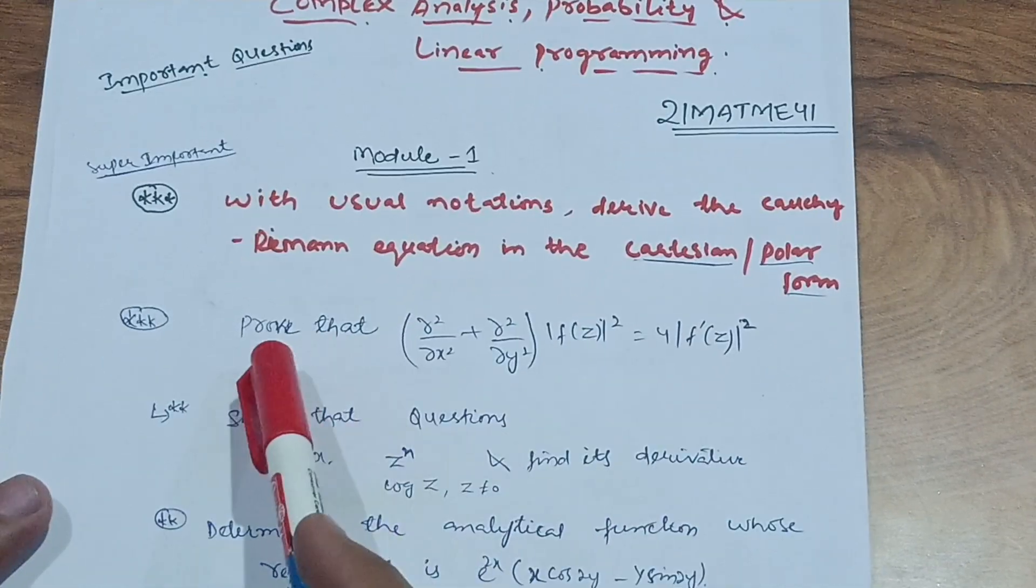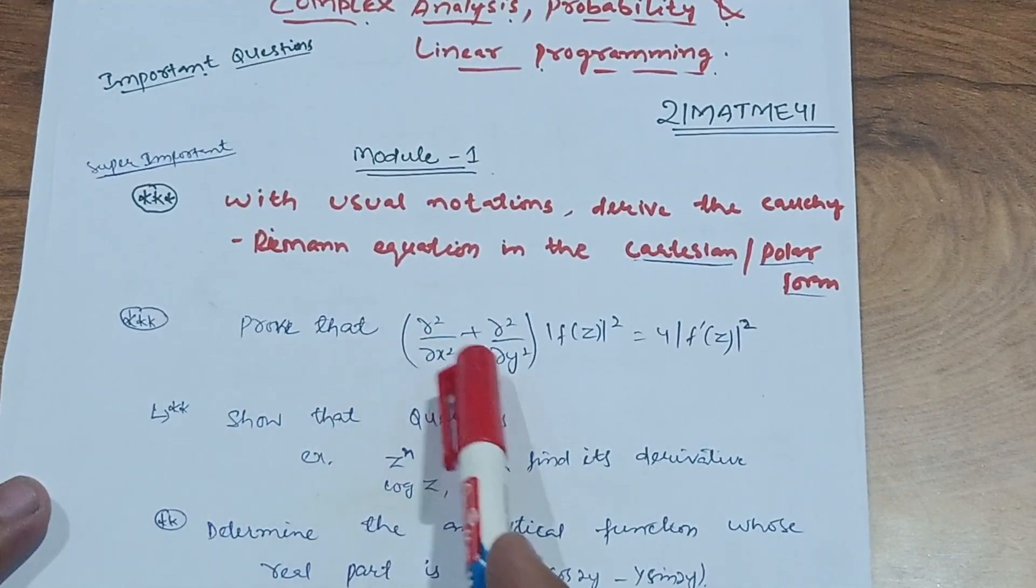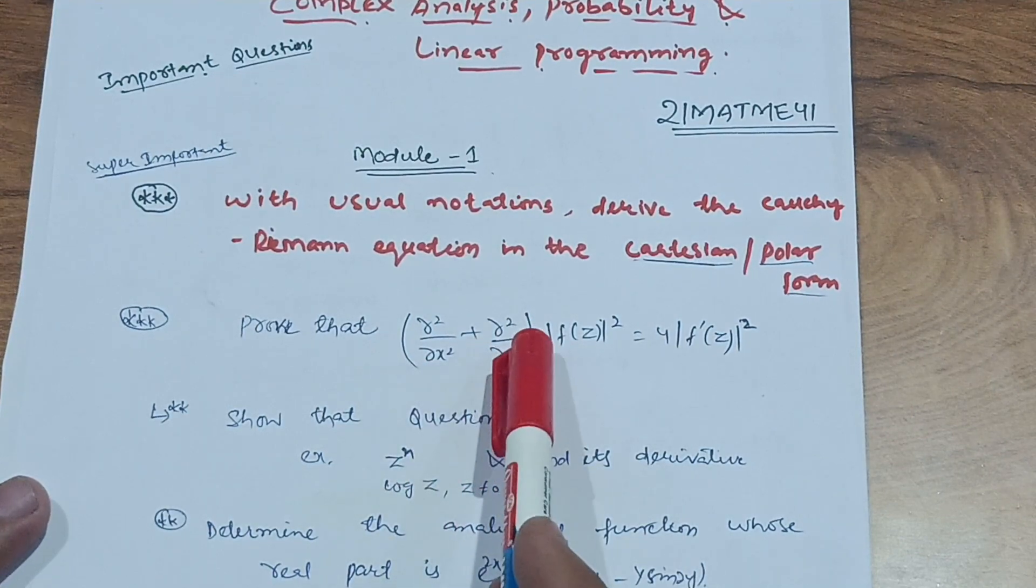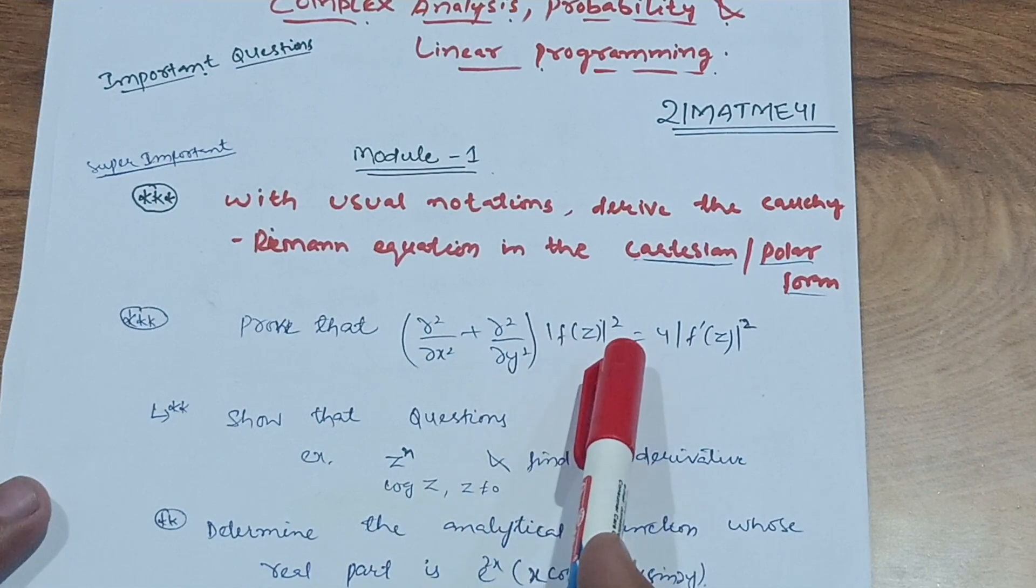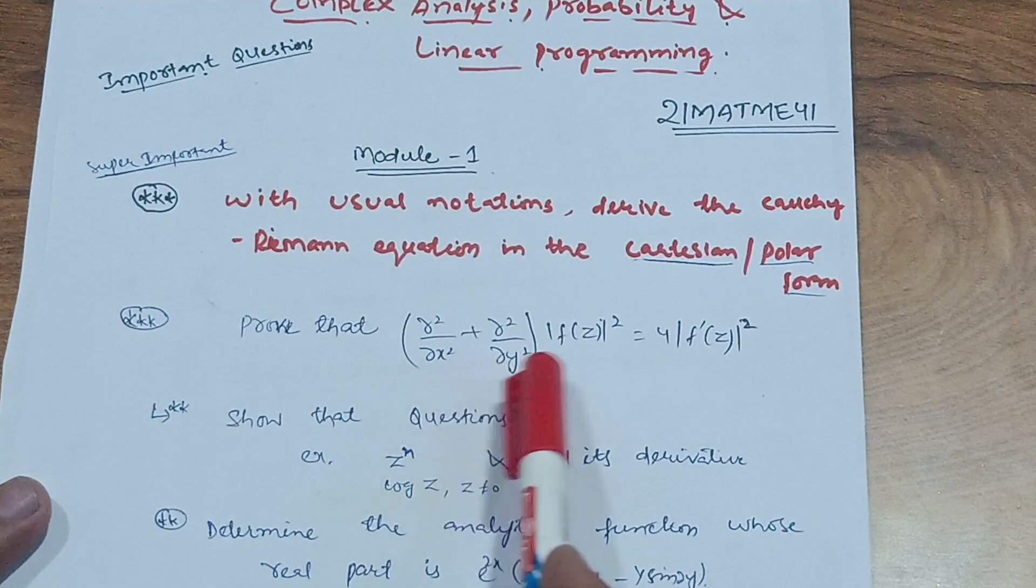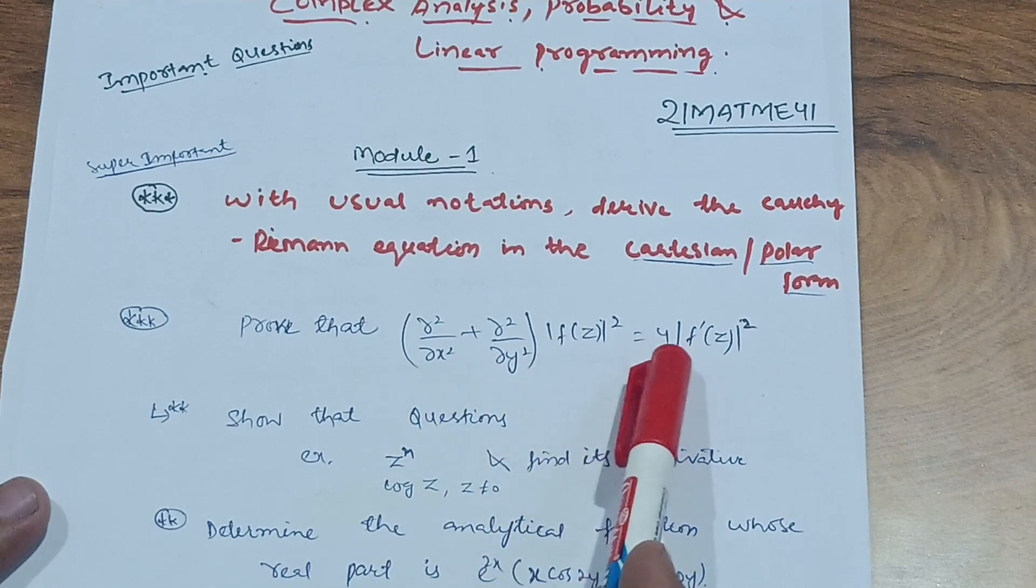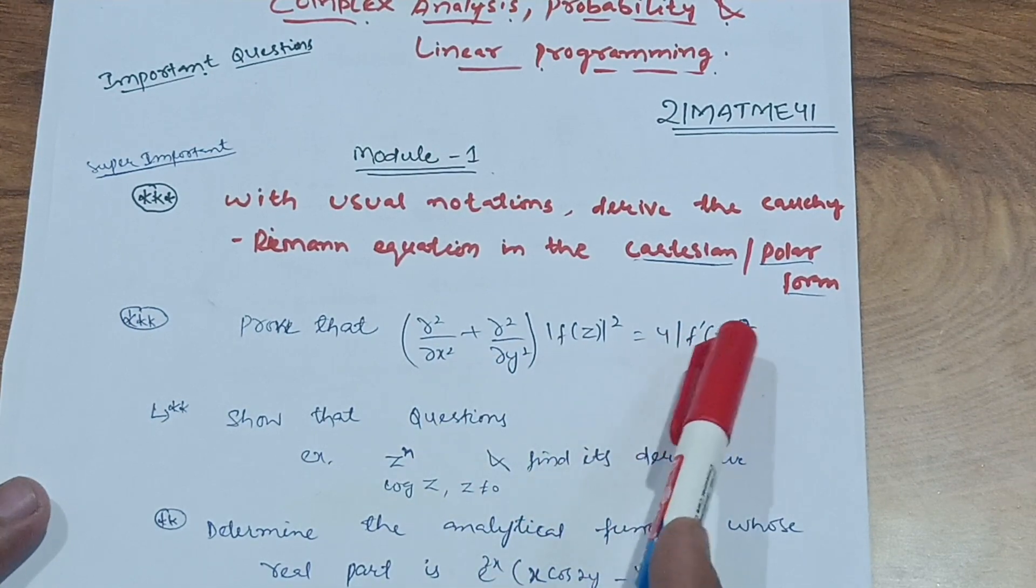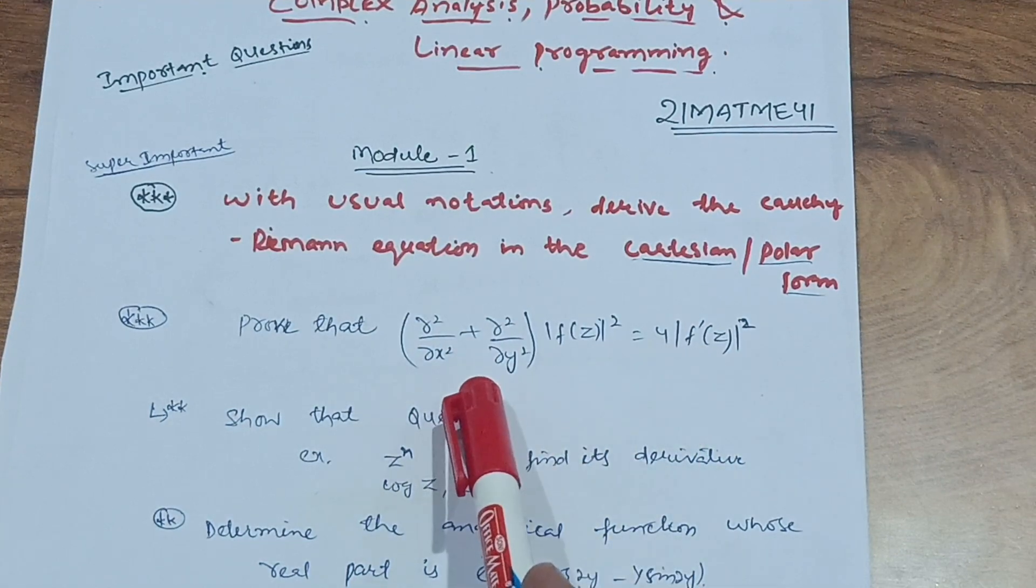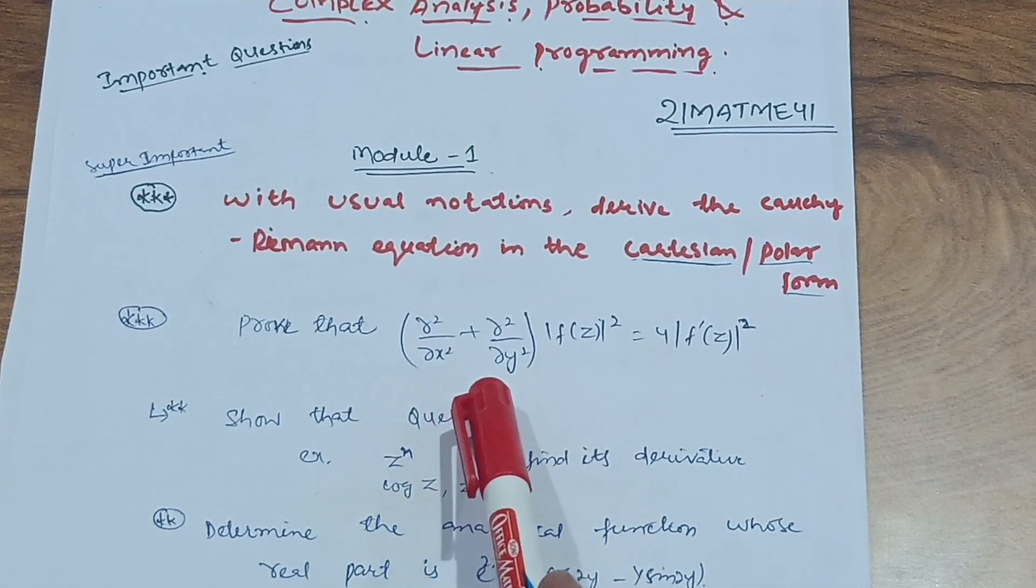Next one is prove that d²/dx² + d²/dy² of |f(z)|² equals 4|f'(z)|². You have to prove this particular equation or you can say derivation.